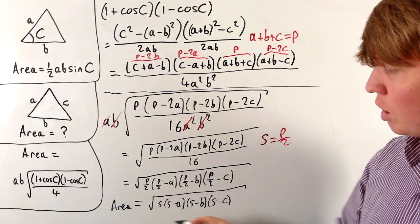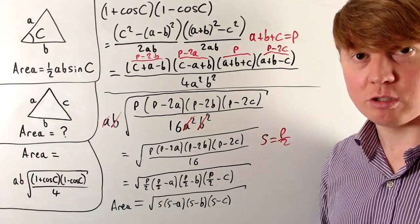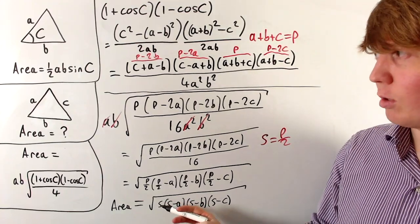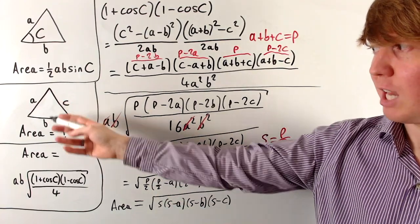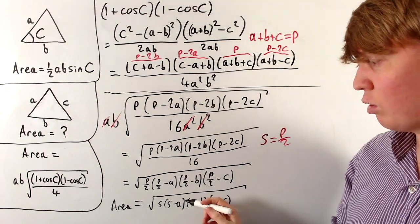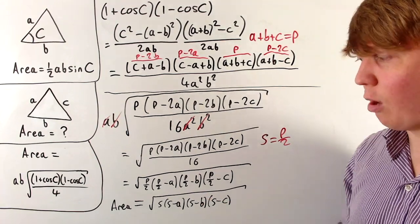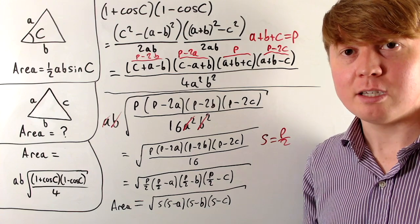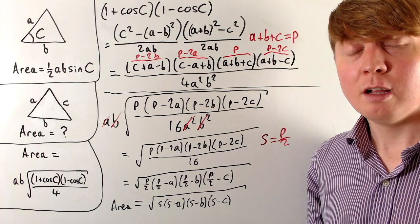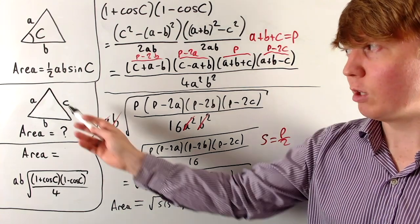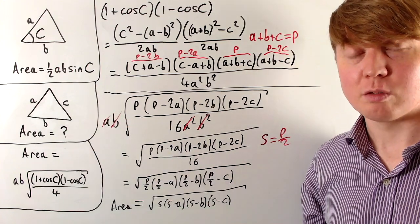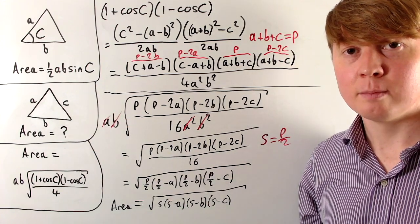We've arrived at Heron's formula, which involves the semi-perimeter s = (a + b + c)/2 and the three side lengths a, b, and c. This gives a really nice, satisfying answer for the area of a triangle when we only know the three side lengths and don't know any of the angles.